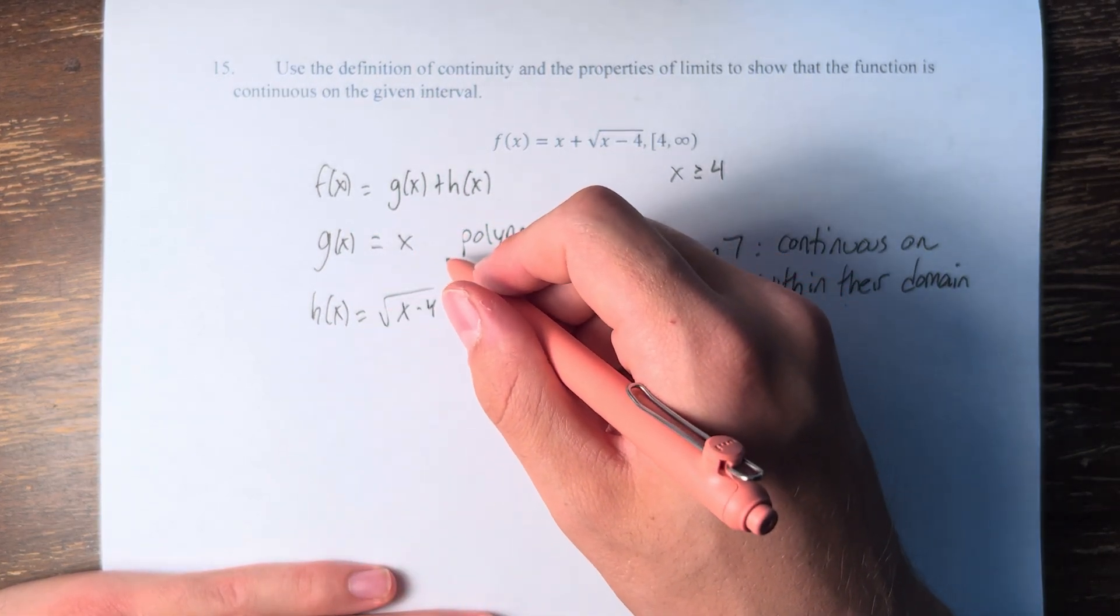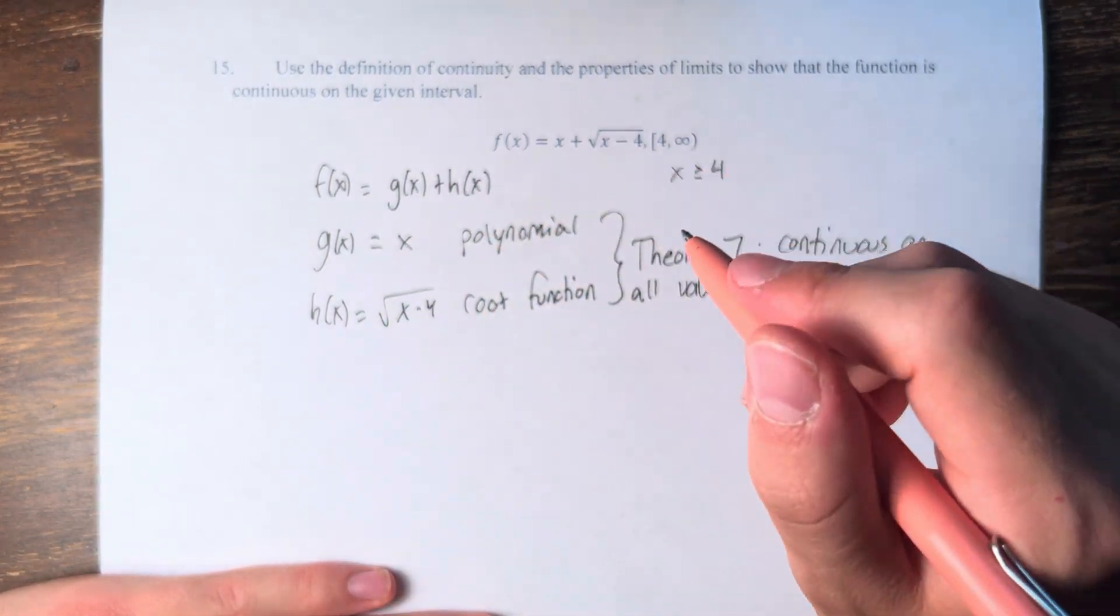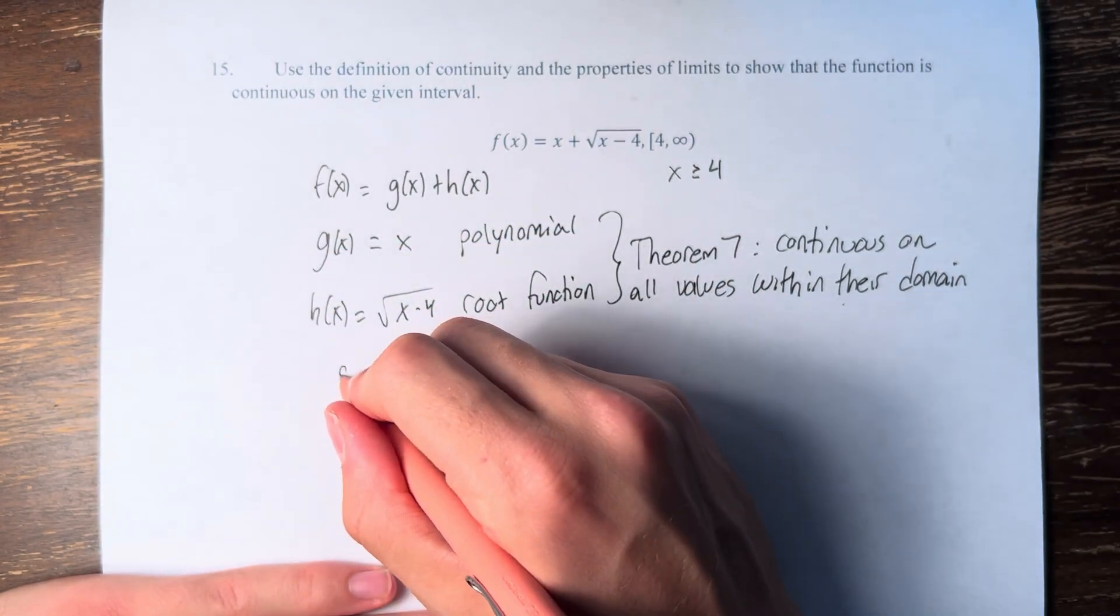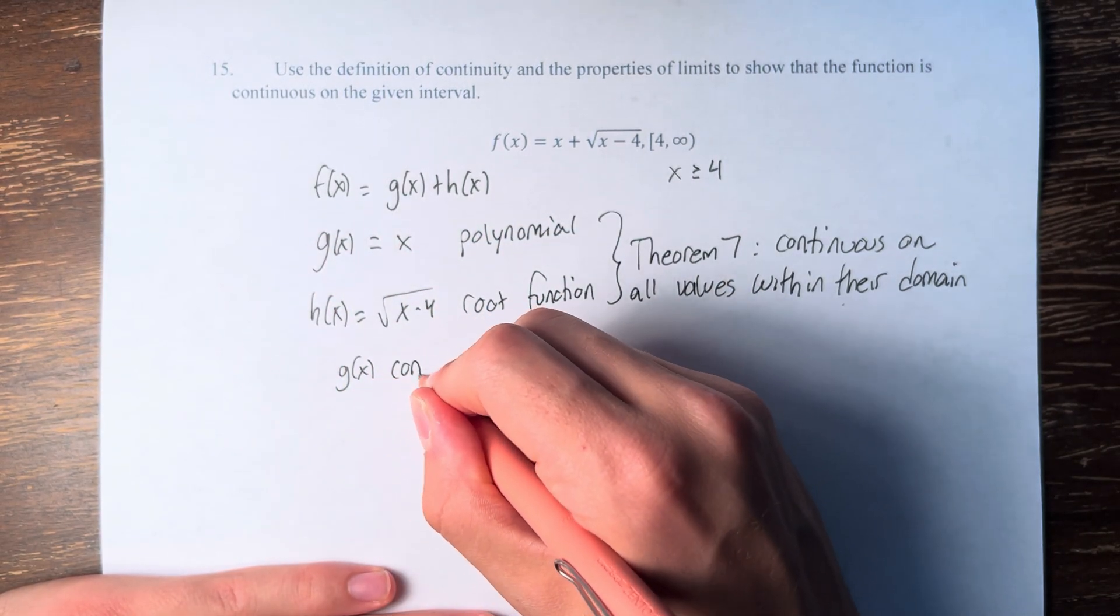So what are their domains? Well, polynomials' domain is all real numbers, so g of x is continuous everywhere.